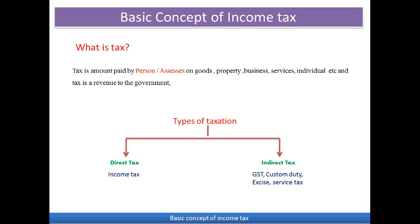Tax is the amount paid by the person or assessee on goods, property, business, or services. There are two types of taxation: one is direct tax and the second one is indirect tax. The tax is classified into these two types — direct tax, an example of which is income tax, and indirect tax.